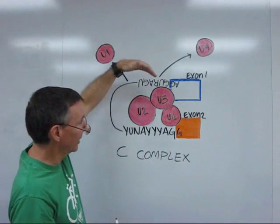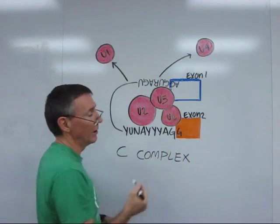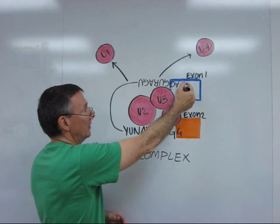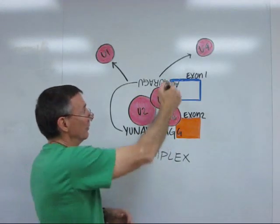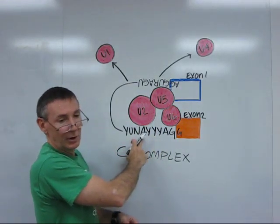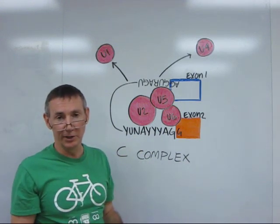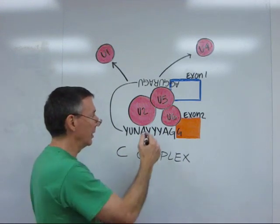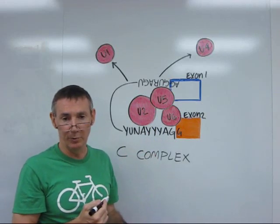The first transesterification that will be catalyzed here is the C complex will cleave the bond between the exon and the five prime end of the intron at the donor site. And then it will join the five prime end of that intron to the RNA over here at the branch point by means of a five prime to two prime phosphodiester bond. This unusual bond will result in a branched chain RNA molecule at that point.